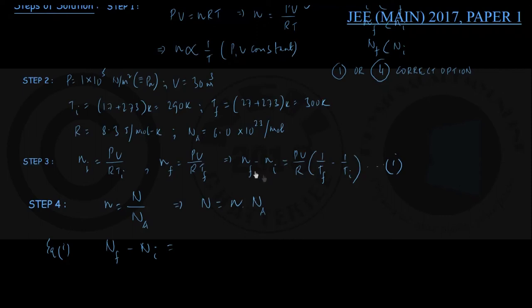Nf is equal to Na into small nf, capital Ni is equal to Na into small ni. Therefore this is coming out to be P into V into Na divided by R into brackets 1 upon Tf minus 1 upon Ti. I am writing everything in symbolic form first just before I put the values from above.